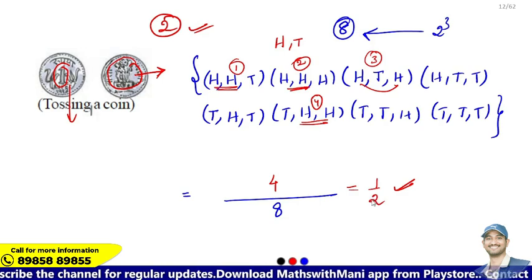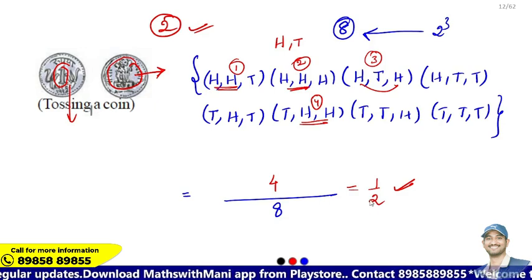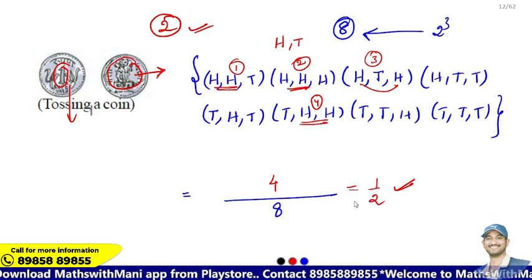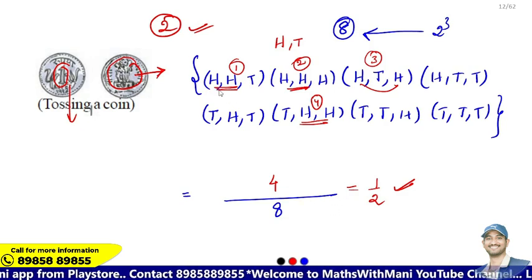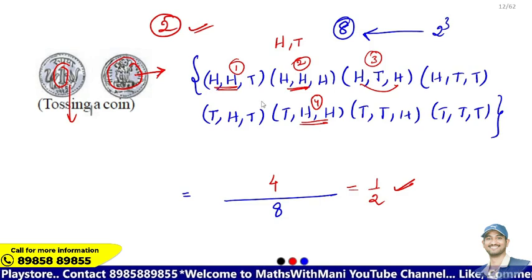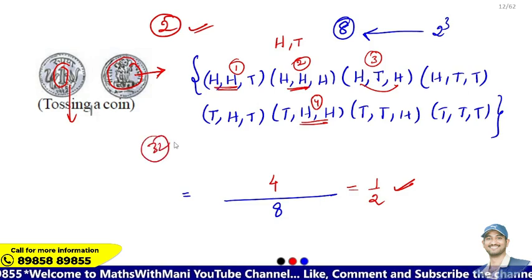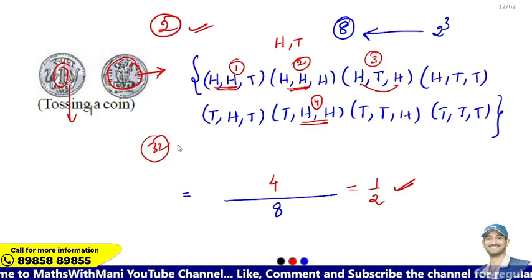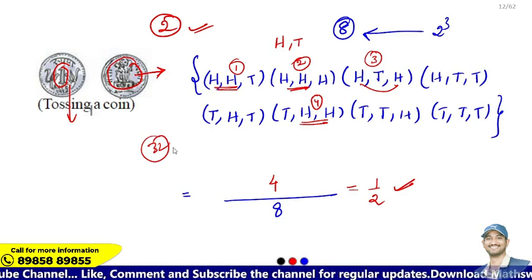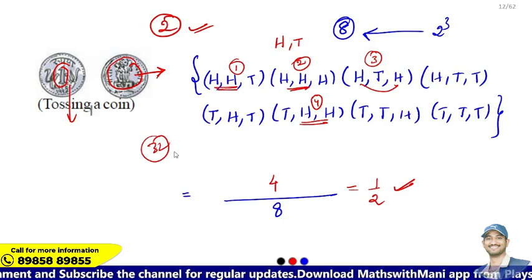Now the next problem: you have 5 coins and you need to find the probability of getting at least 2 heads. With 5 coins, 2 to the power 5 equals 32 total outcomes. How can we solve this efficiently for 5 coins?